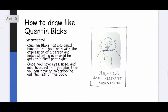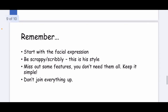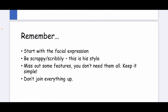The second tip is to be scrappy. Quentin Blake has explained that he starts with the expression of a person and then keeps going until he's got it right. This character is described with notes like 'big egg' — maybe meaning a big egg-shaped head — and 'small elephant,' which could describe his nose, and he has a moustache. Once you have eyes, nose and mouth or beard, you can scribble the rest of the body quite roughly. So remember: start with the facial expression, be scrappy or scribbly, miss out some features — you don't need them all — keep it simple, and don't join everything up.